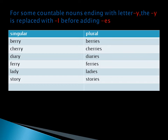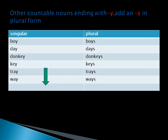And then story becomes stories. Other countable nouns ending with Y just add S in their plural. Words like boy becomes boys, day becomes days, donkey becomes donkeys, key becomes keys, tray becomes trays, way becomes ways.